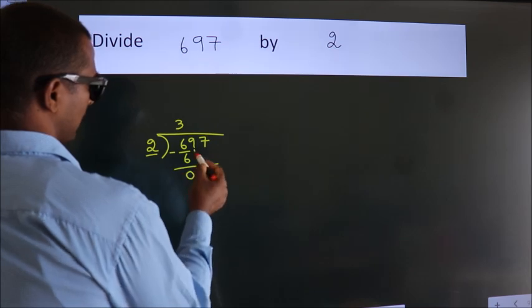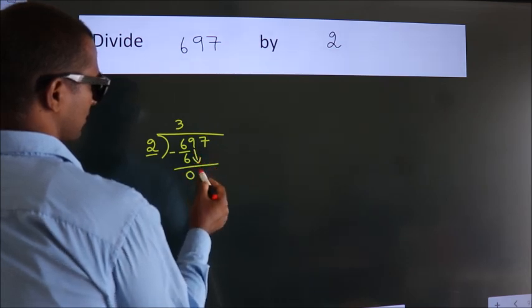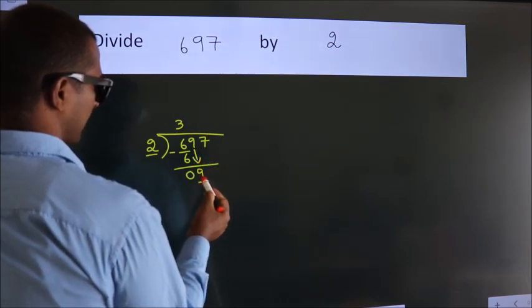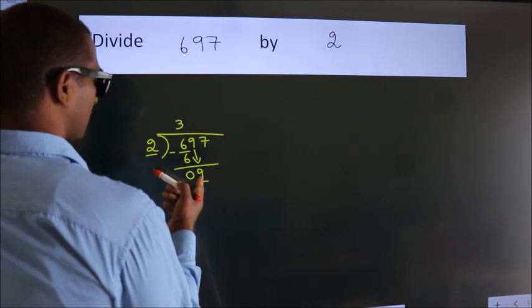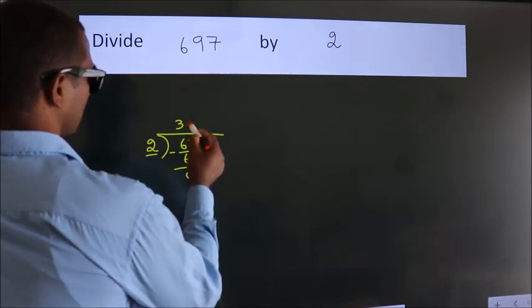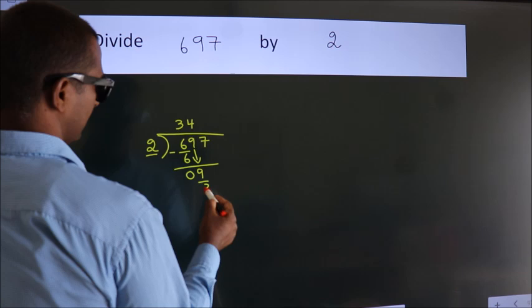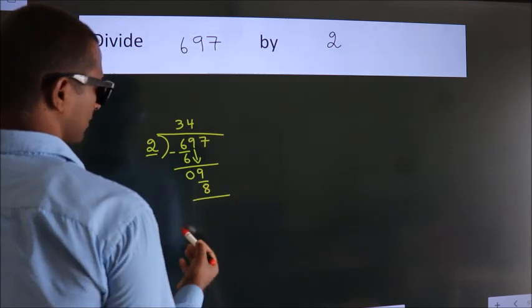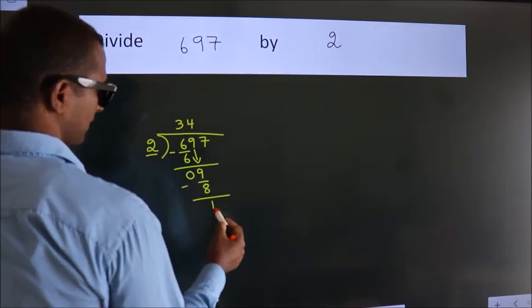After this, bring down the beside number. So, 9 down. A number close to 9 in the 2 table is 2 times 4, which is 8. Now we subtract. We get 1.